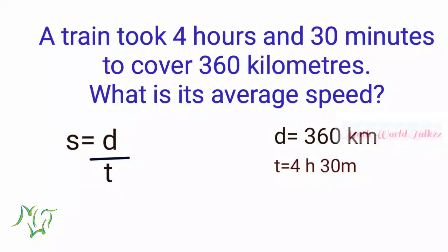So we want to convert 30 minutes to hours. 30 minutes means half an hour. So T is equal to 4 and a half hours, which is 9 by 2 hours. Substituting in the equation, we can see time is in fraction form, so we rewrite the equation accordingly.